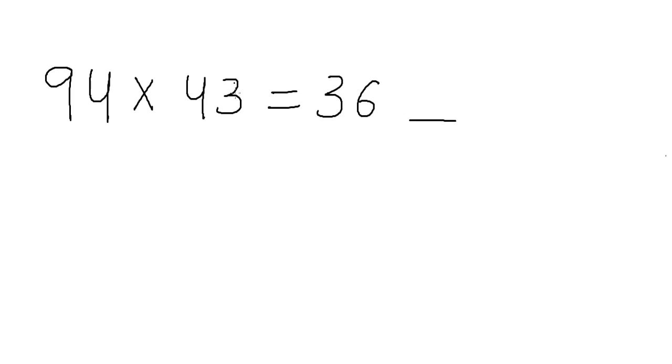Then the last part of the answer we get by multiplying the last digits which is 4 into 3. We get that as 12. So as I said since we have got 12 here, we just keep the units digit and we carry forward the 10th digit. So we will keep 2 here. And we carry forward the 10th digit which is 1 which will be added to the number that we get in this blank.